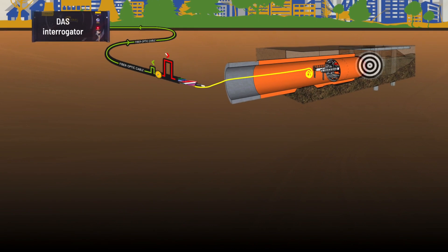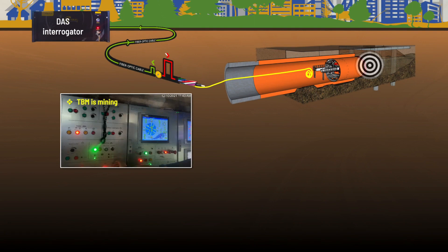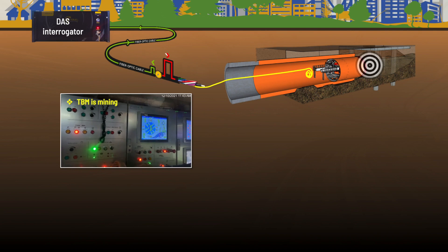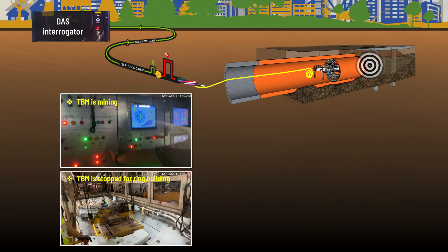The TBM tunneling is operated ring by ring. Construction of one ring includes two stages. Mining stage: The cutter head is driven by motors to break the soil and rock. Ring building stage: The cutter head stops while the TBM assembles the segments into a complete ring.